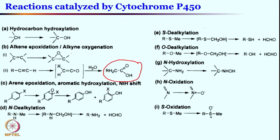If there is an arene ring, aromatic ring hydroxylation — arene epoxidation along with an NIH shift — will occur. The oxo species undergoes electrophilic aromatic substitution at the olefin center to give the epoxide moiety, which can then undergo NIH shift or overall phenol formation upon subsequent rearrangement and removal of HX.